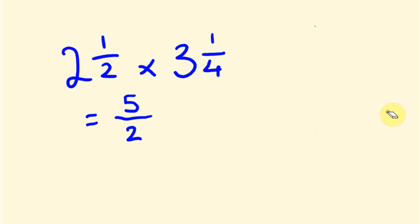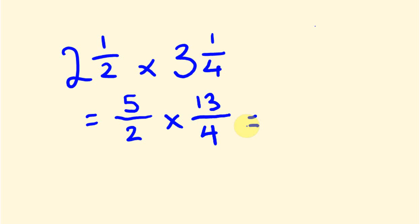So we get five over two. Now I'll change three and one quarter the same way: three times four plus one. Three times four is twelve, plus one is thirteen, over four. So what does five times thirteen equal? Hopefully you get 65, and this goes over eight. So our answer is 65 over eight.